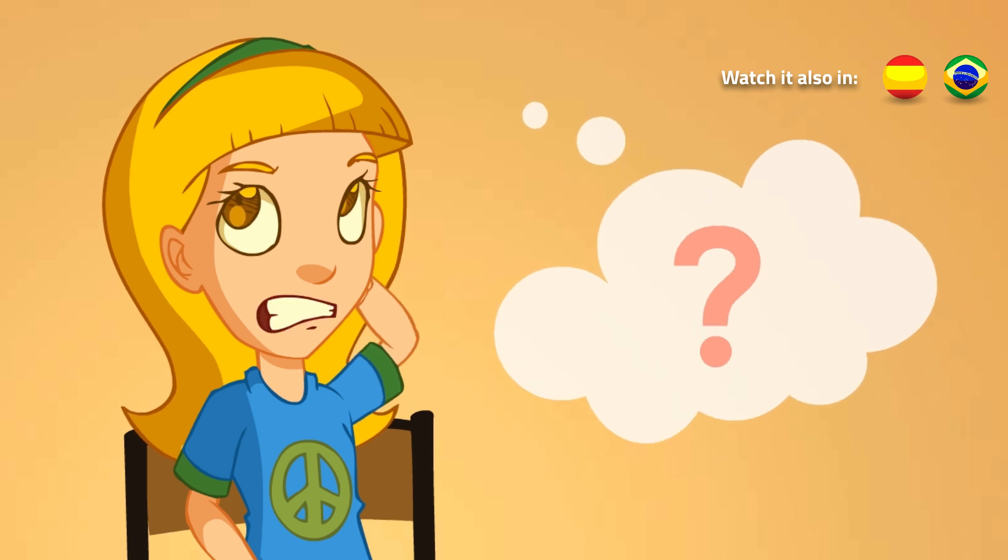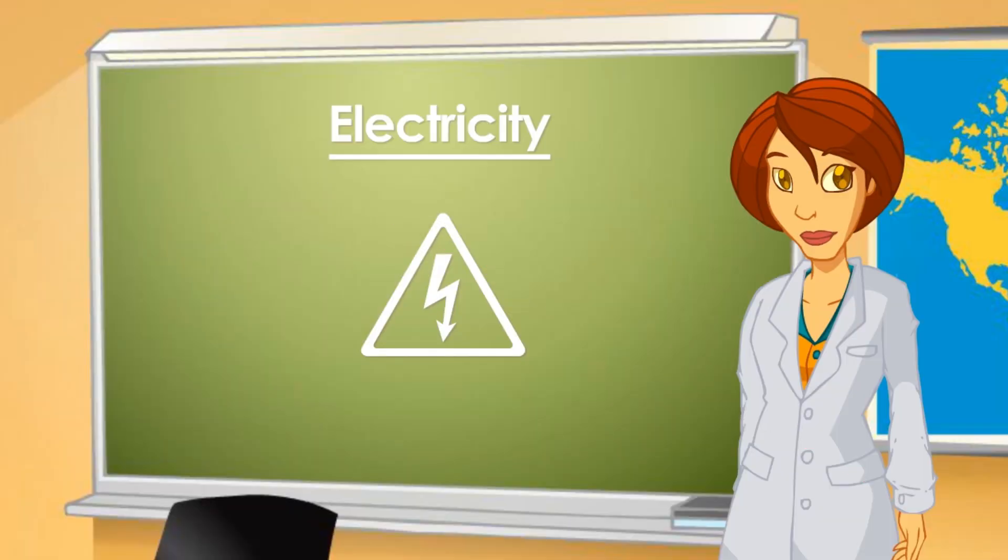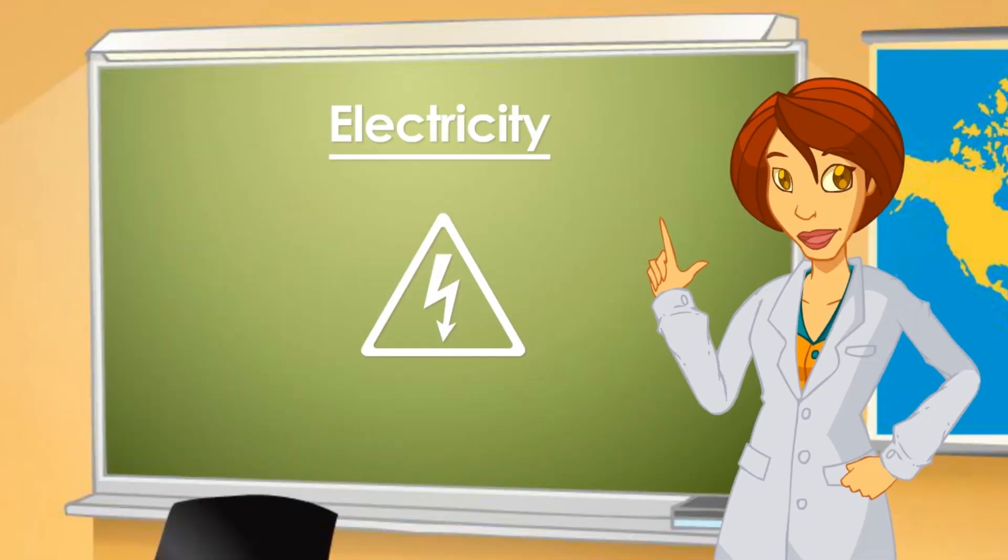What would happen if the rubber were not there? If the wires weren't covered by the insulator, electricity would escape through the sides and wouldn't reach our homes. Besides, it'd be very dangerous, because anybody touching the wires would be electrocuted.